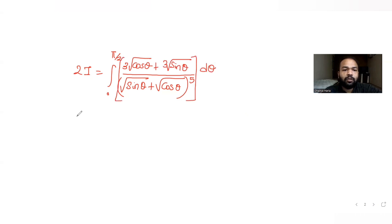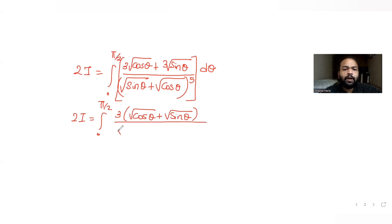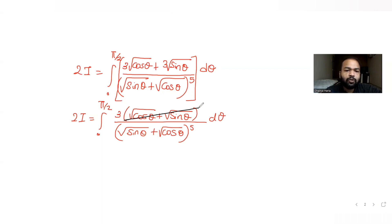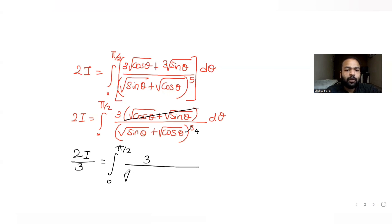What happens here is that one of the terms in the numerator gets cancelled with a term in the denominator. Out of the five powers, you will now have four as the power because one term cancels. So you get 2I equal to the integral from zero to π/2 of 3 divided by (√sinθ + √cosθ)^4 dθ.